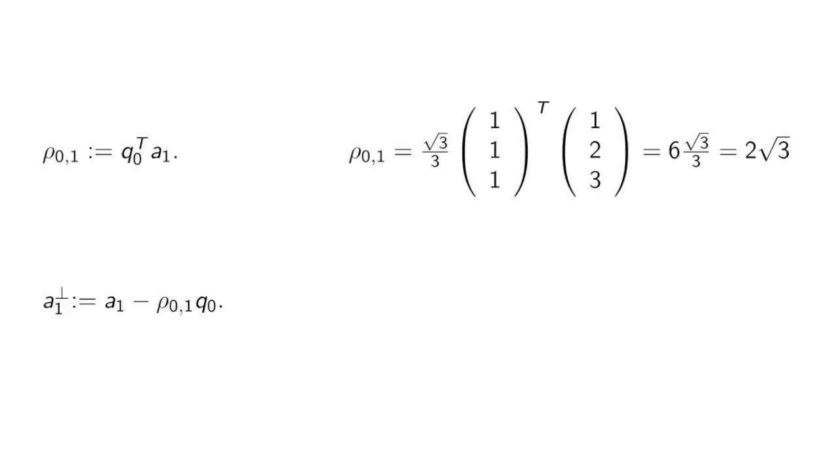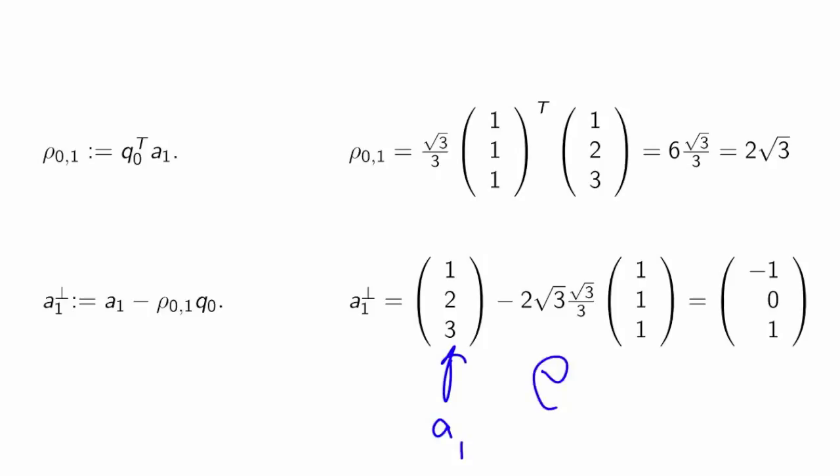Now, let's look and see how this works with this specific example with which we started. This here is the vector q0. We take the inner product of that vector with this new vector, 1, 2, 3. If we work it out, that turns out to be 2 times the square root of 3, if I did this right. Once we have that scalar, we then take the vector A1.